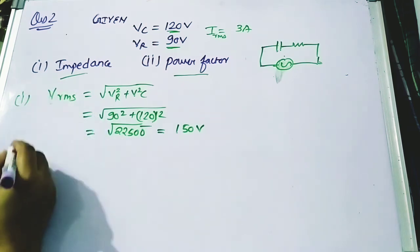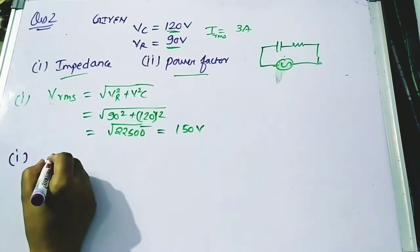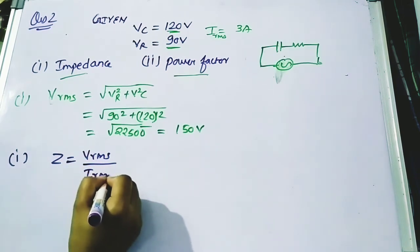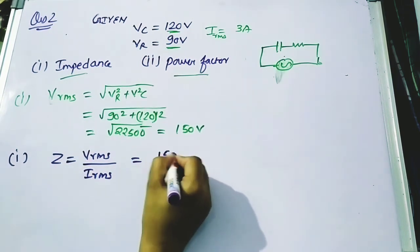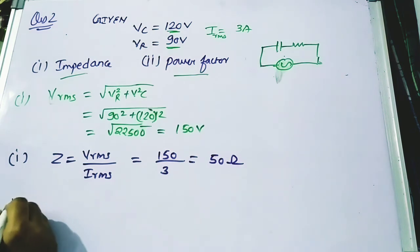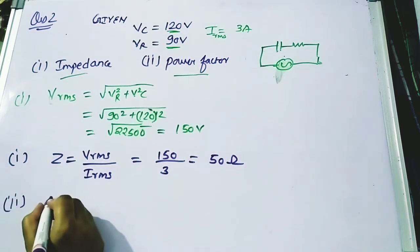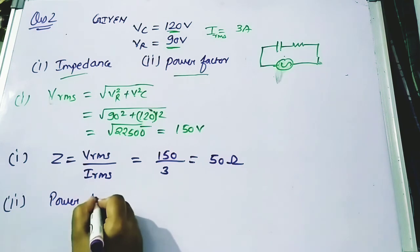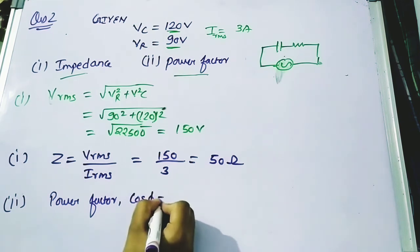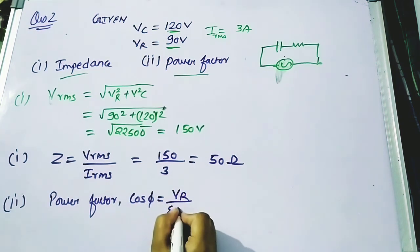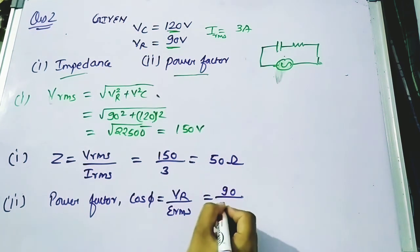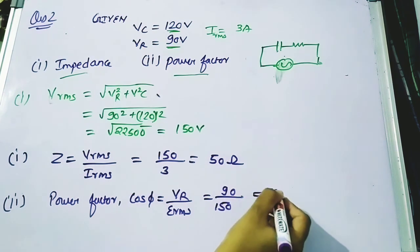We calculated V_RMS to find the impedance. The impedance formula is Z = V_RMS / I_RMS = 150 / 3 = 50 ohm. For the power factor, cos φ = V_R / V_RMS = 90 / 150 = 0.6. This is the power factor of the circuit.